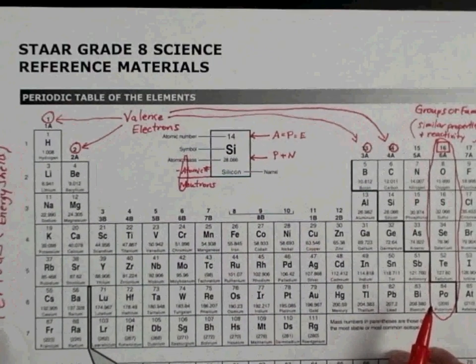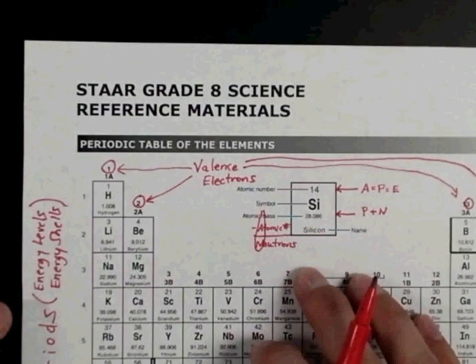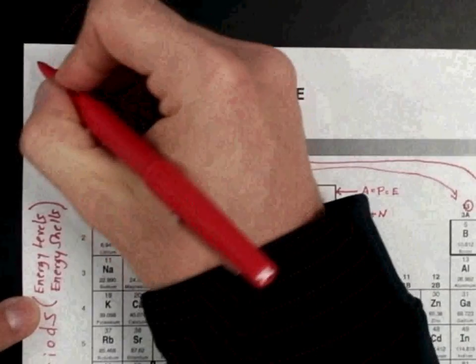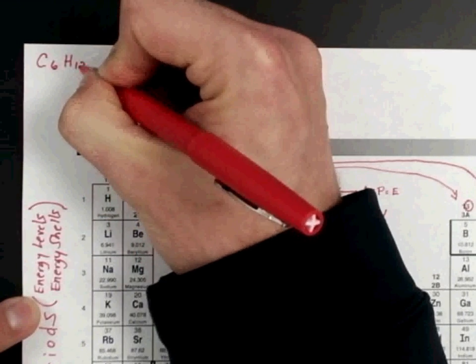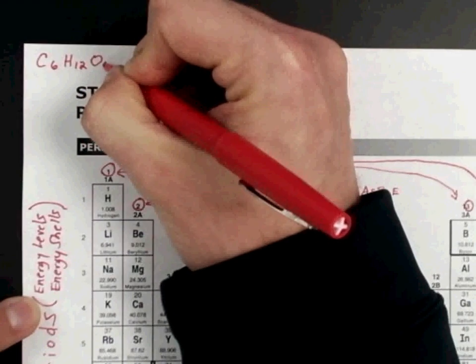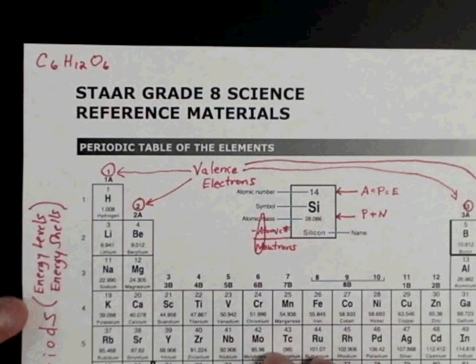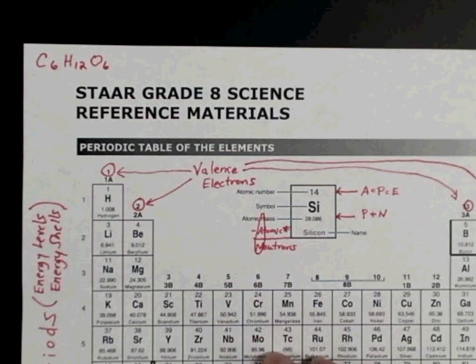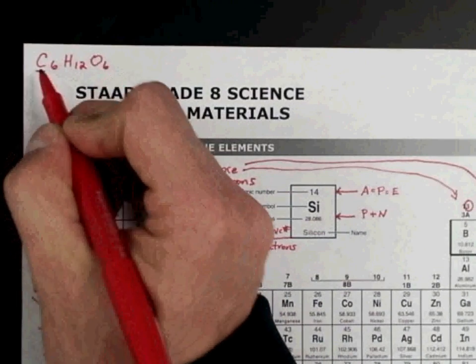So I'm going to focus in on this top left corner, and we're going to first talk about a compound known as glucose, which is C6H12O6. We're going to make some comments about it real quick. Seen this before show up on previous STAAR tests. So three elements. It has three elements. And you do that by counting the capital letters.